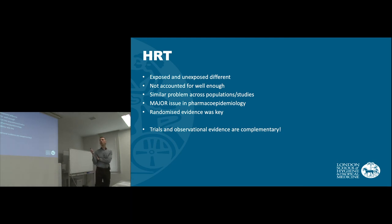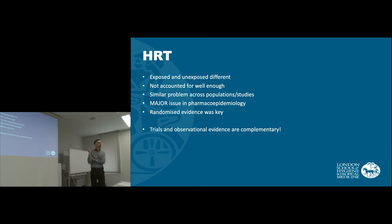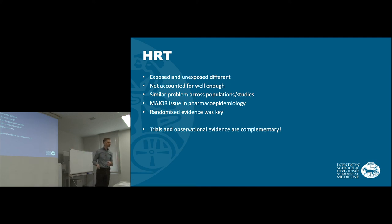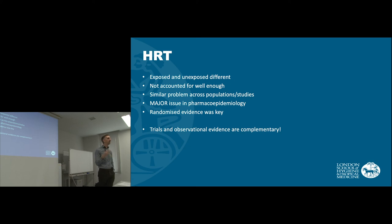What happened was that the people exposed and unexposed to HRT were fundamentally different — healthy women tended to take HRT, and healthy women would tend to have less heart disease. Some studies also used prevalent users rather than starting at the point women initiated HRT; since cardiovascular problems tend to occur close to the start of treatment, excluding those early events made continuing users look much healthier. This is a major issue in pharmacoepidemiology, and in this instance randomised evidence was the key. I hope you take away that randomised and non-randomised studies are complementary, and that it depends on what question we're trying to answer.